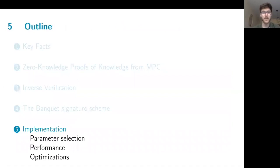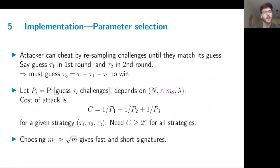Finally, to discuss a bit the implementation, to explain our parameter selection, we consider that an attacker can cheat by resampling the challenges of each intermediary round until they match a guess that it's made. So say that the adversary would guess tau1 of the first round challenge and tau2 of the second round, then he will have to guess the remaining tau3 to win each, to win all of the executions. Now, if we let Pi denote the probability that he has correctly guessed these challenges, we can write the cost formula for a particular given strategy. Then we simply require that this cost be greater than 2^kappa for our security parameter for every possible strategy, and we increase our parameters until this is reached. And we furthermore added by choosing M1 to be about the square root of M gives an appropriate balance between speed and signature size.